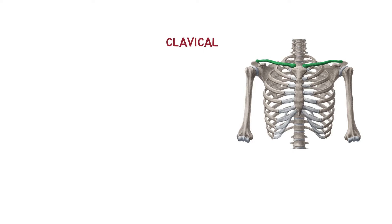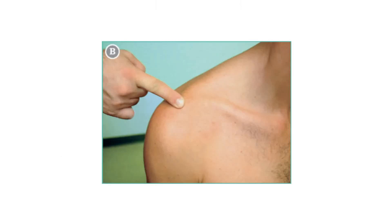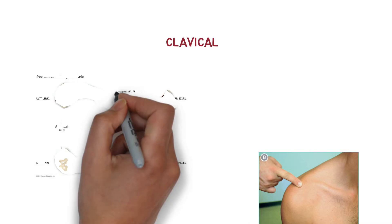The clavicle extends between the manubrium sterni and the acromion of the scapula. It is classified as a long bone. You can palpate it along its length, and you can also check your skinny friends. It can be visible under the skin. So this is the clavicle.